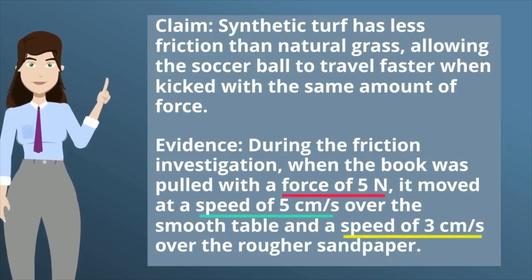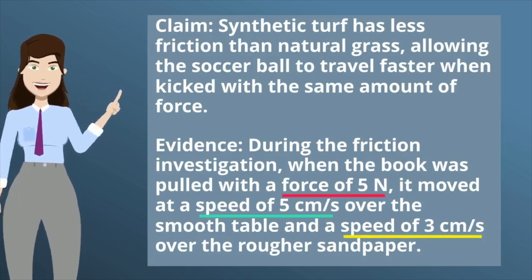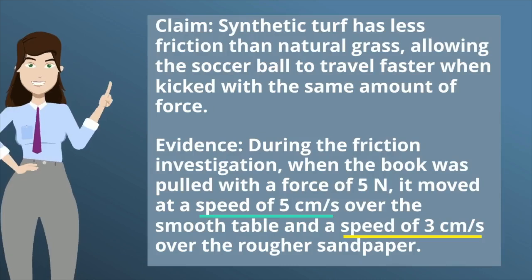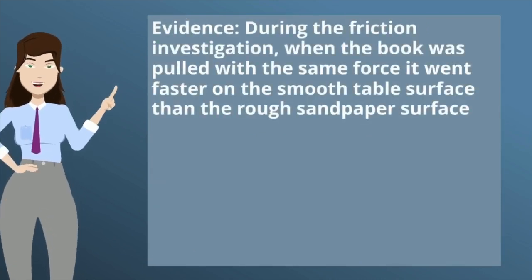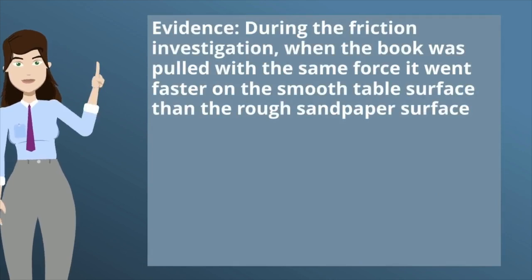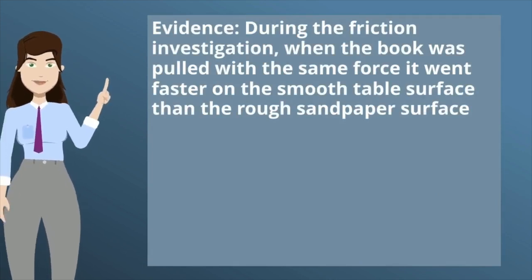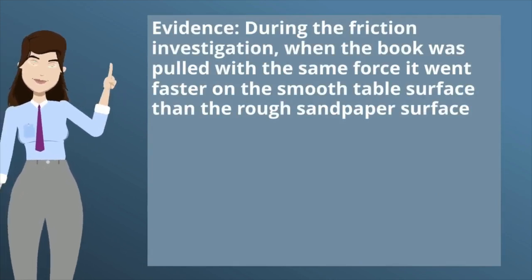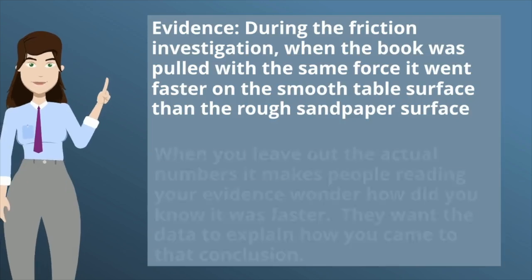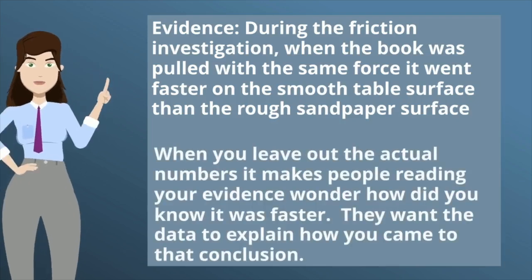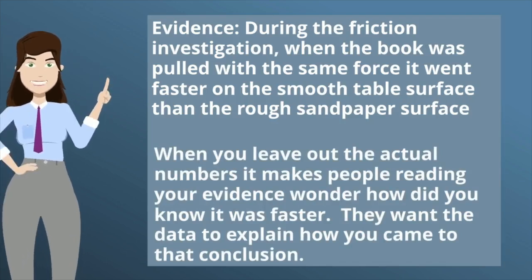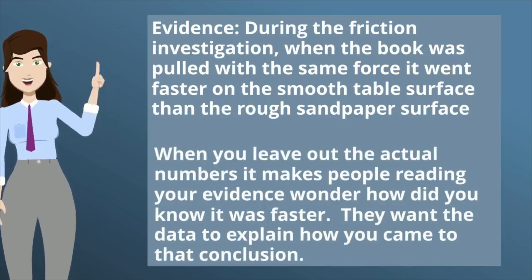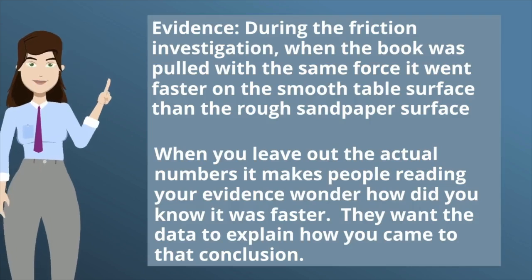It moved at a speed of 3 centimeters per second over the rougher sandpaper. Notice that in the evidence we have the actual numbers: 5 Newtons, speed of 5 centimeters per second, and speed of 3 centimeters per second. Now let's check out evidence that didn't include the numbers: during the friction investigation, when the book was pulled with the same force, it went faster on a smooth table surface than a rough sandpaper surface. When you leave out the actual numbers, it makes people reading your evidence wonder how did you know it was faster. They want the data to explain how you came to that conclusion.